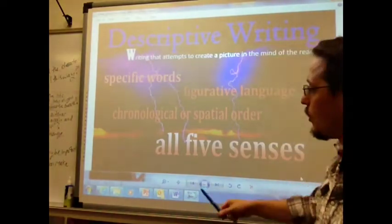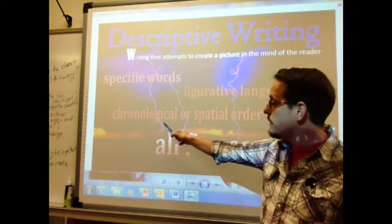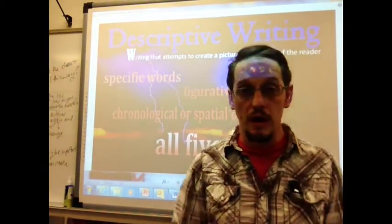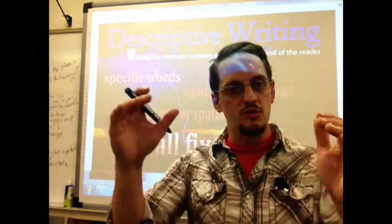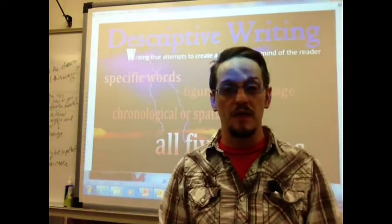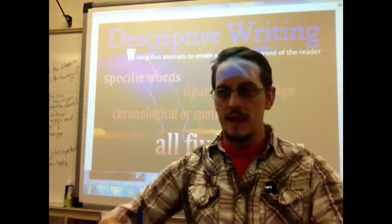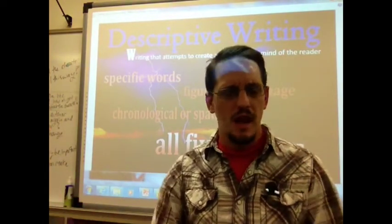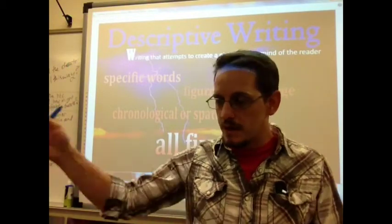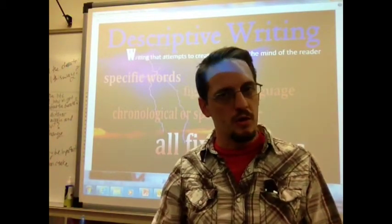We also want to organize in an organized fashion when we describe something. We might use chronological or spatial order. Chronological would be describing something based on the order that it happened. So if we tell a story about a storm, we might start at the beginning of the storm, tell how it got worse and worse, and then tell what life was like after the storm — beginning, middle, and end. That's chronological organization.